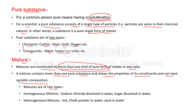Mixtures are of two types: homogeneous and heterogeneous. Examples of homogeneous mixtures are sodium chloride dissolved in water and sugar dissolved in water. Examples of heterogeneous mixtures are soil, chalk powder in water, and sand in water.